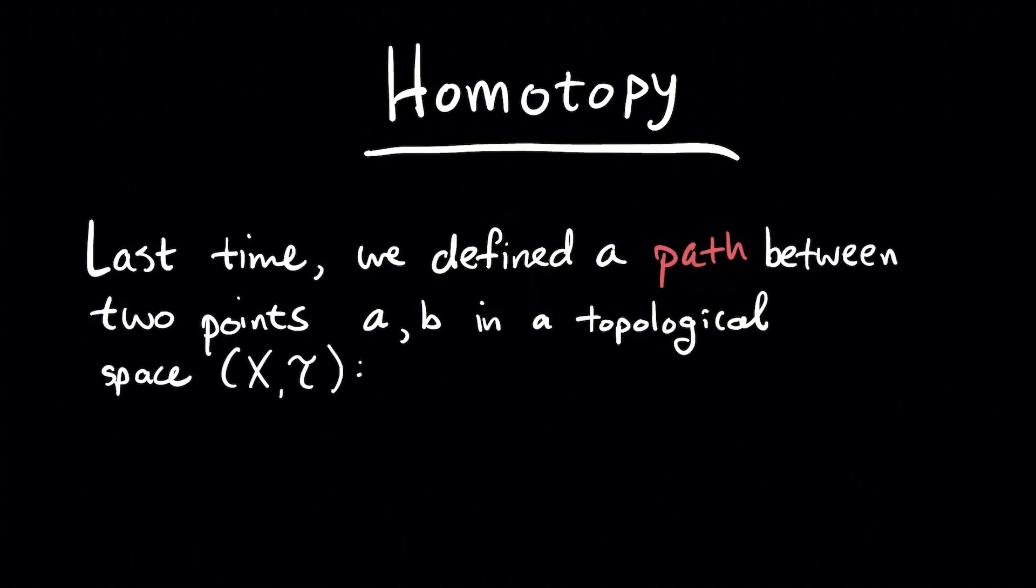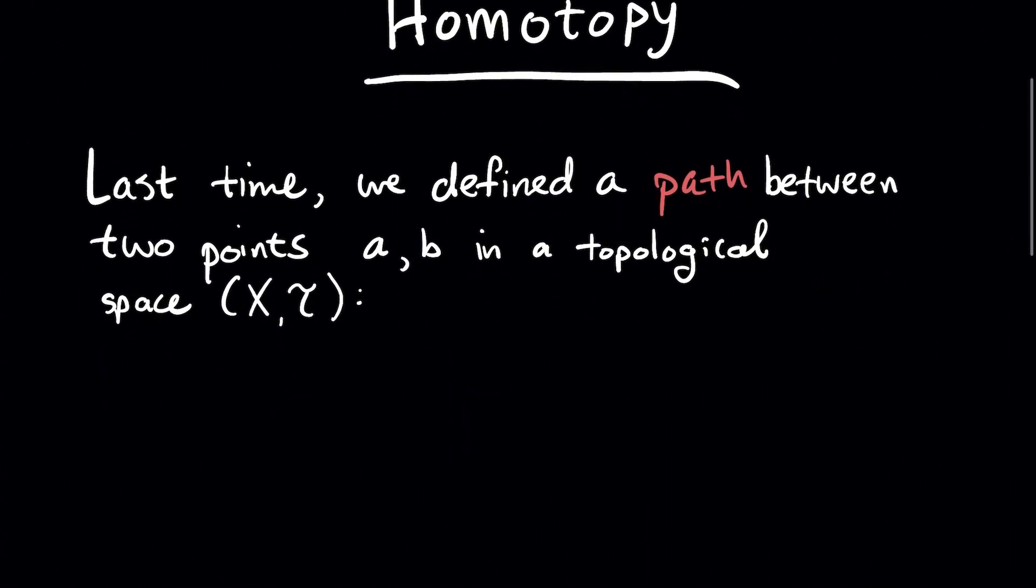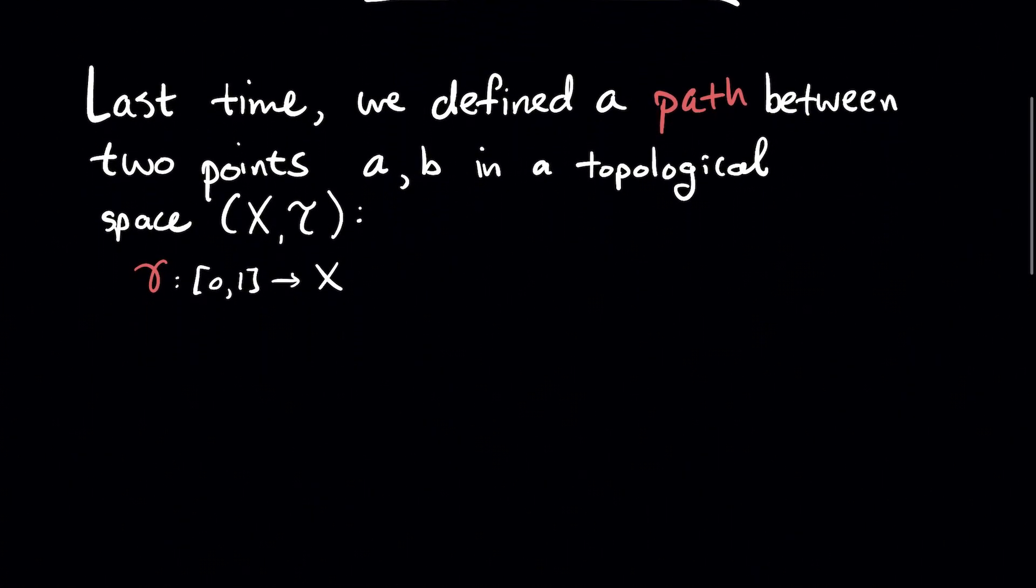In this video we're going to talk about a homotopy between two paths in a topological space. Last time we defined a path between two points A and B in a topological space X with topology T to be a continuous function gamma whose domain was the unit interval of all real numbers between 0 and 1.